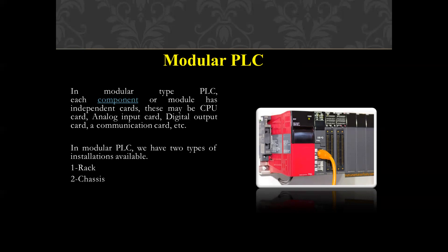We have to provide a software download after inserting the new card as per the requirement. Sometimes we use redundant cards for CPU I/O, modular communication modules. Some PLC manufacturers have an inbuilt option to auto-copy the software from the main card to the redundant card.